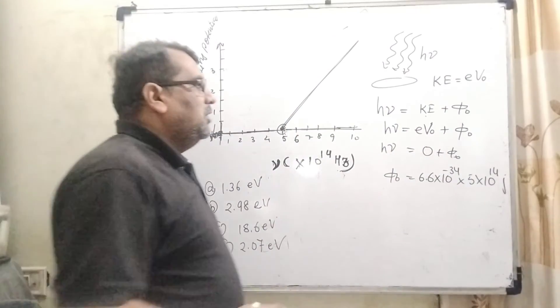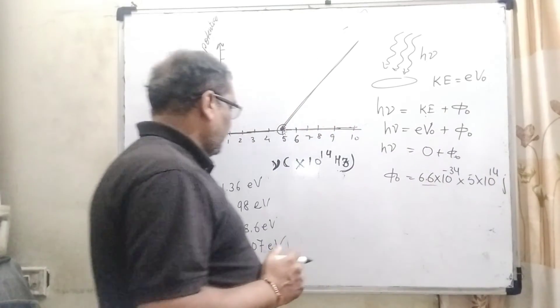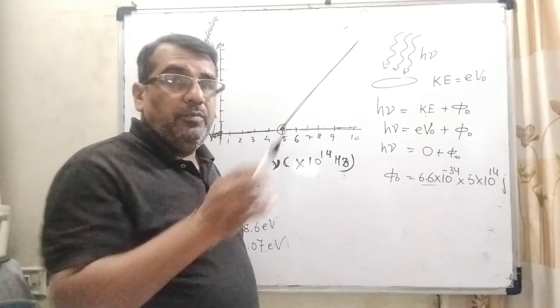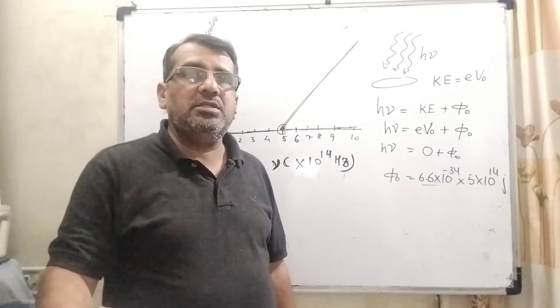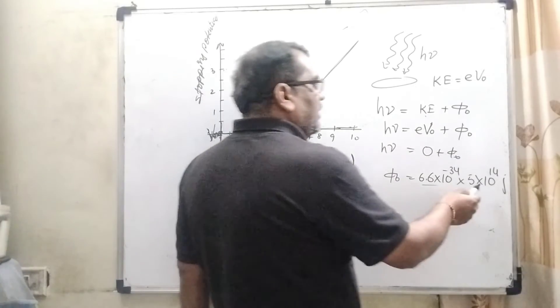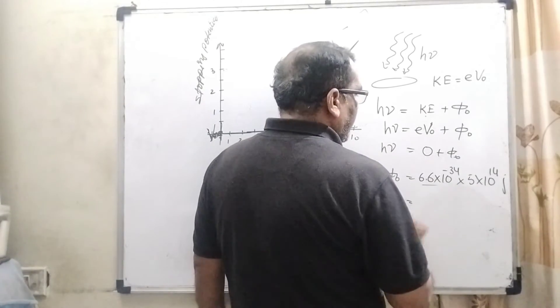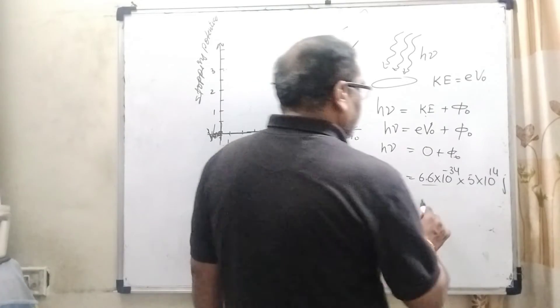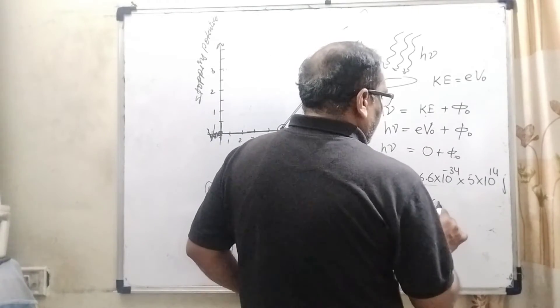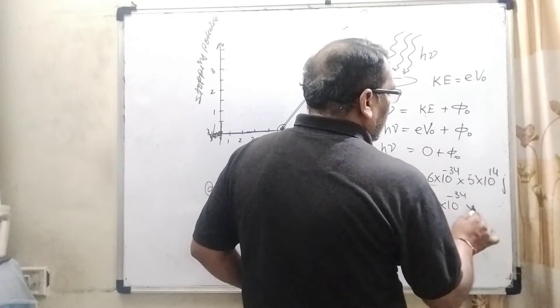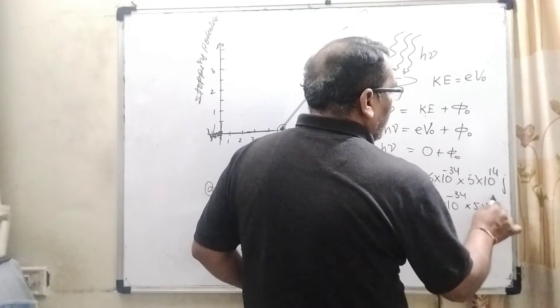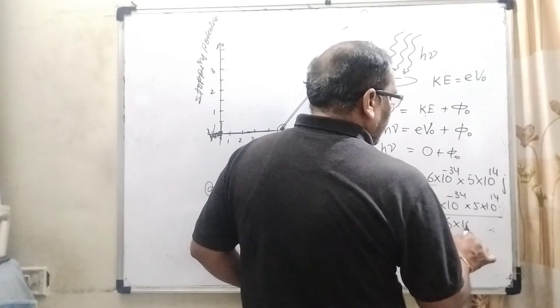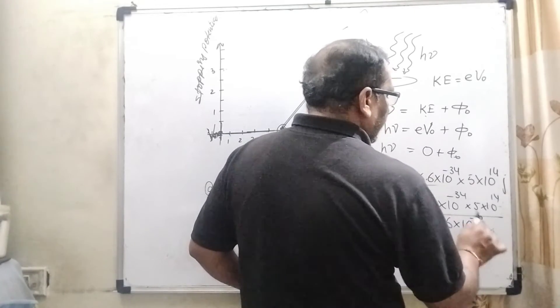Now all these values are multiplied in joules, but we have given the options in electron volts. So 1 joule is equal to 1.6 into 10 raise to power minus 19 electron volts. So we have to convert into electron volts, then divided by 1.6 into 10 raise to power minus 19. So here 6.6 into 10 raise to power minus 34 into 5 into 10 raise to power 14 divided by 1.6 into 10 raise to power minus 19.